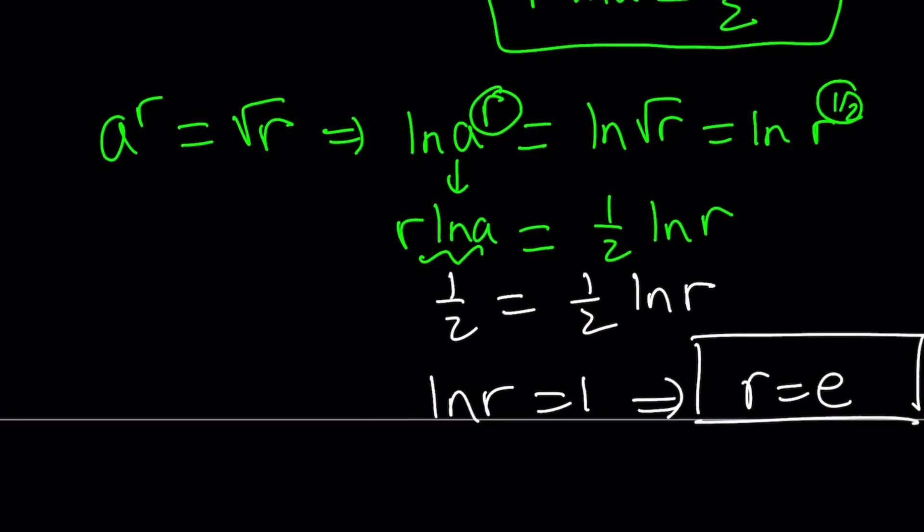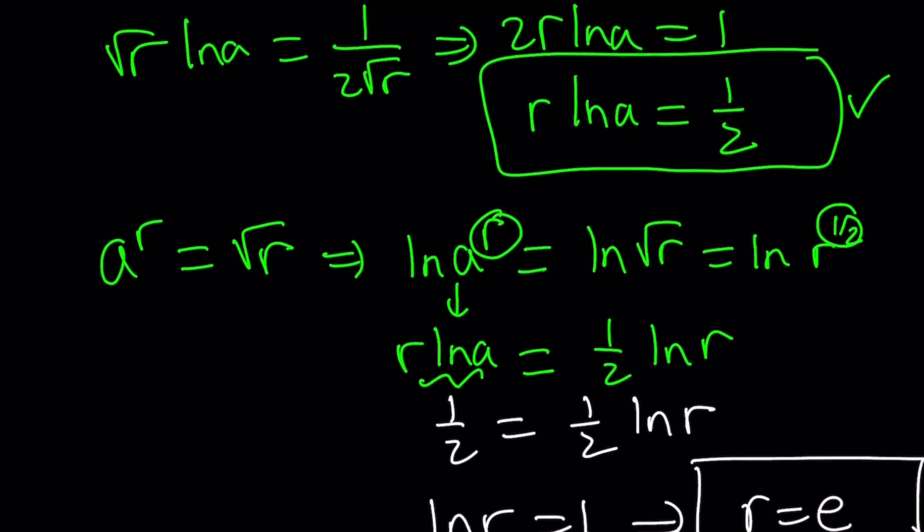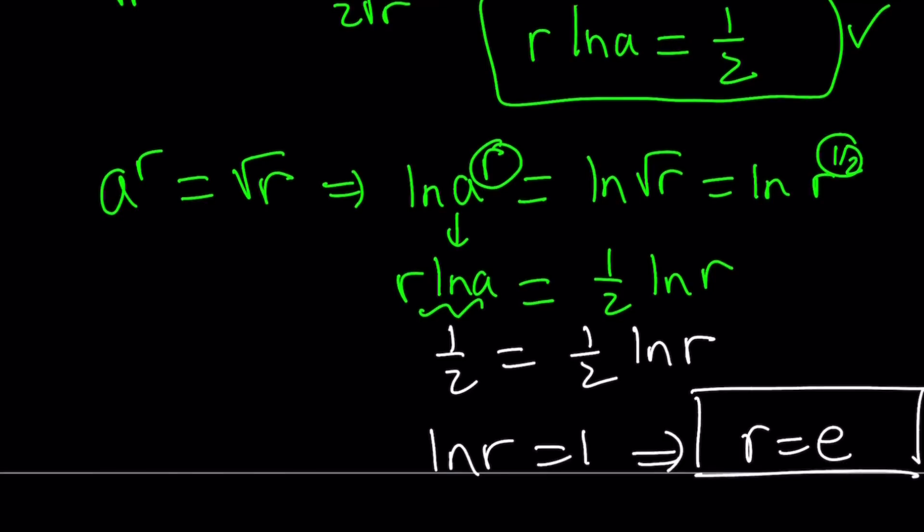So we got the value of r, but r is something that we invented. We're looking for a, not r. But once you find r, you can find a very easily. How? To find a, we're going to use one of these equations. For example, r ln a equals 1 half.